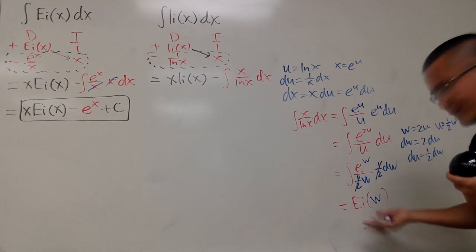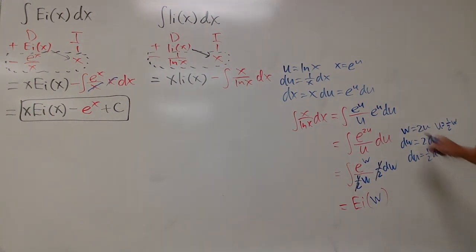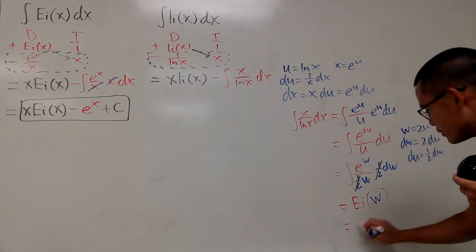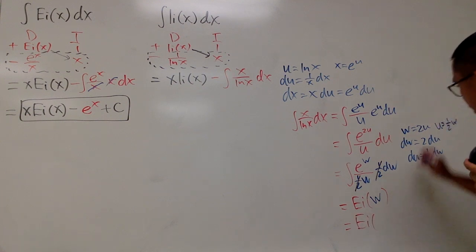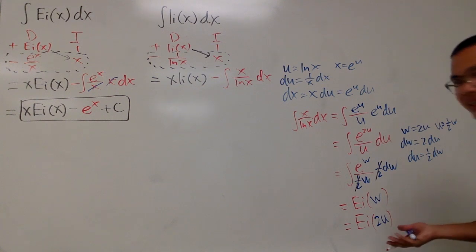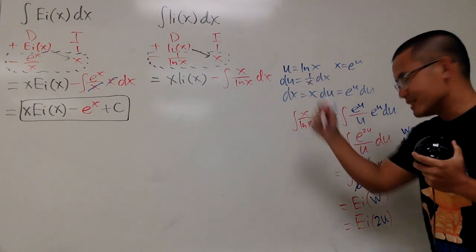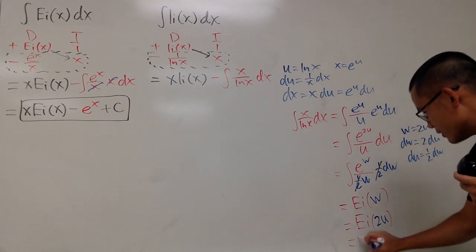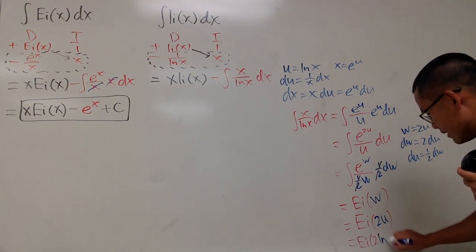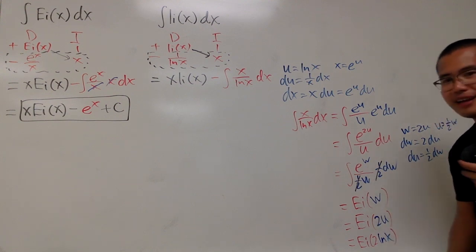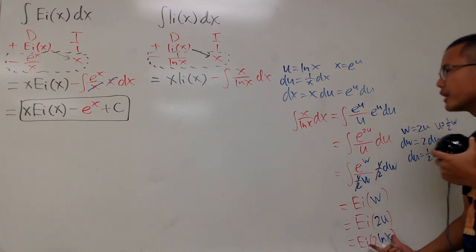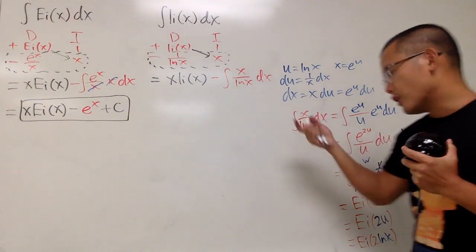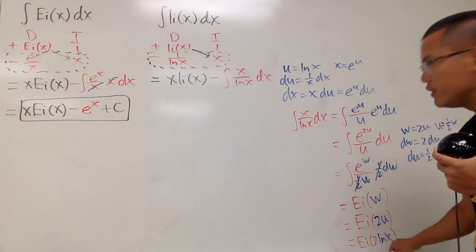Not u, but ei of w. And if you look back, w is 2u, so we can of course look at this as ei of 2u. But we have to go back to the x world. u is ln(x). So finally we can say this is just ei(2ln(x)). Very nice. All in all, this right here is the answer for that part. So we can come back here and finish this nicely.